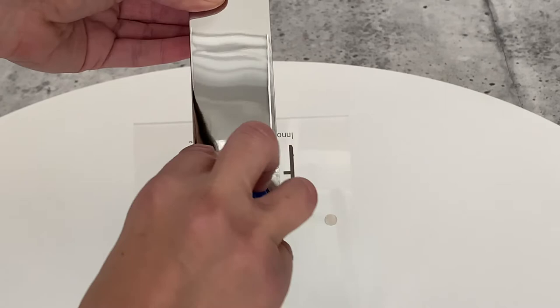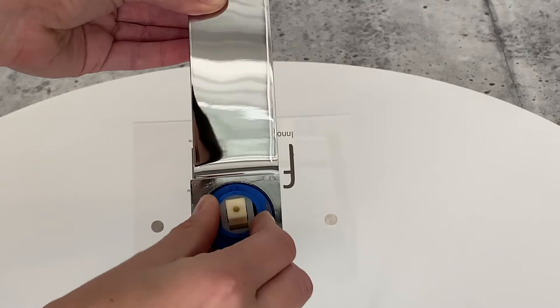Gently turn until you can feel the cartridge seat in the faucet cavity. The top portion of the cartridge must be adjusted so that it points straight ahead because this is what positions your handle.